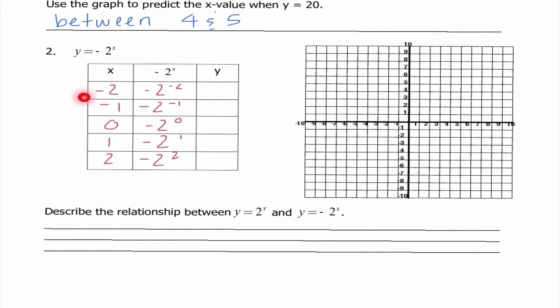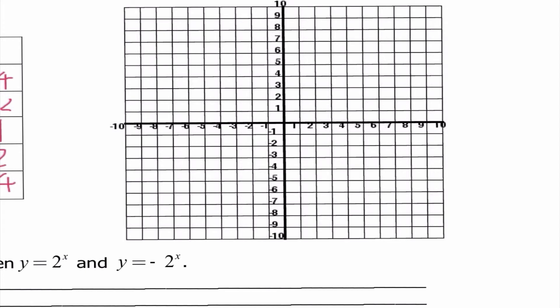Moving on to number 2. I already took the liberty of choosing some x values and substituting them in. A key thing when evaluating these is figuring out what is being taken to the power. Notice this negative 2 is not in parentheses, so this is just telling me I'm doing the opposite of 2 to the negative 2nd power, the opposite of 2 to the negative 1st power. So I'm going to get negative 1/4, negative 1/2, negative 1, negative 2, negative 4.